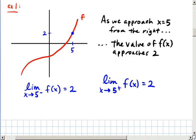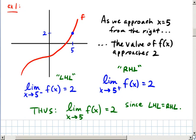Thus, the limit as x approaches 5 of f(x) is equal to 2, since the left-hand limit and the right-hand limit are equal.